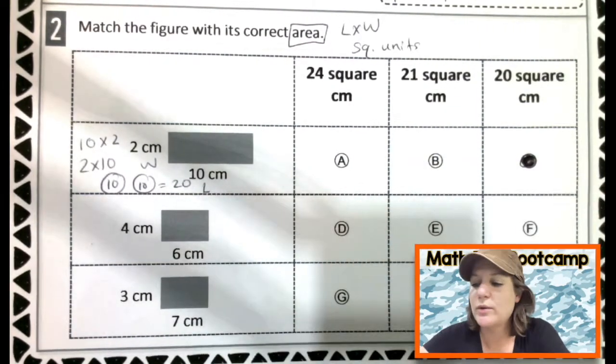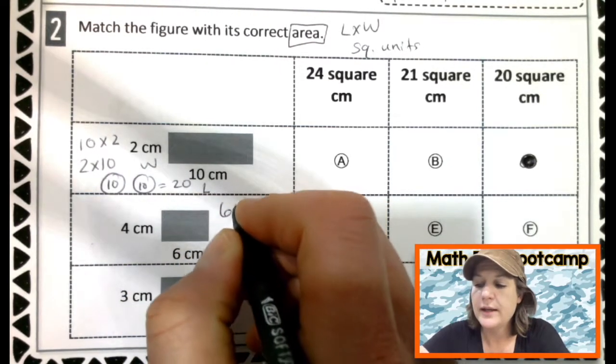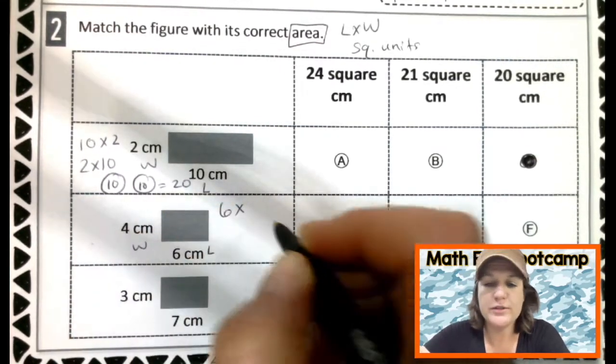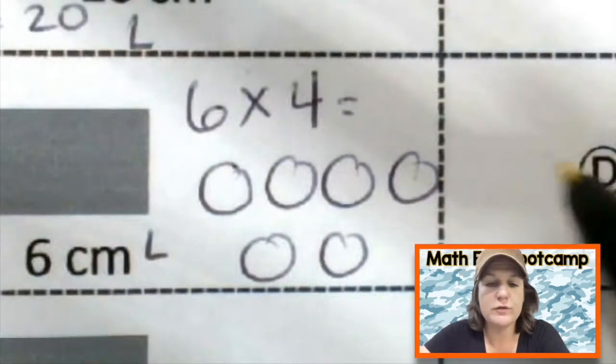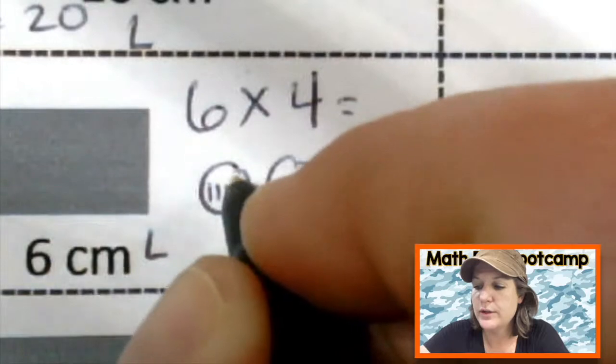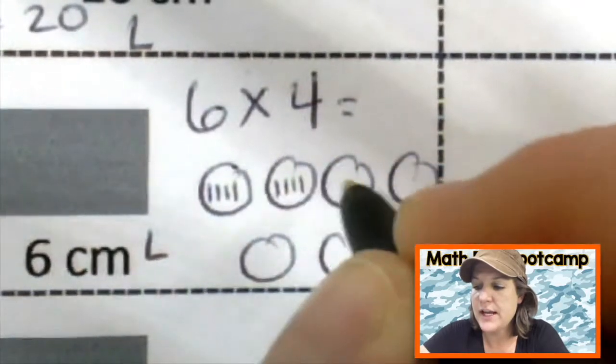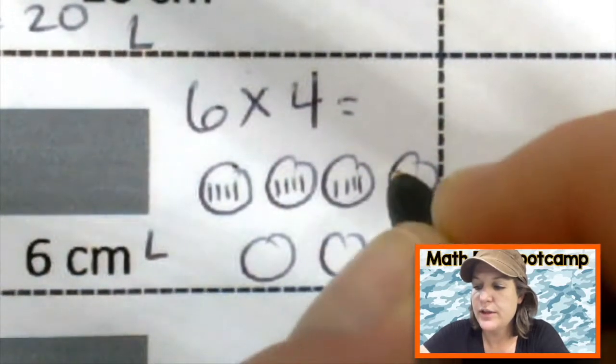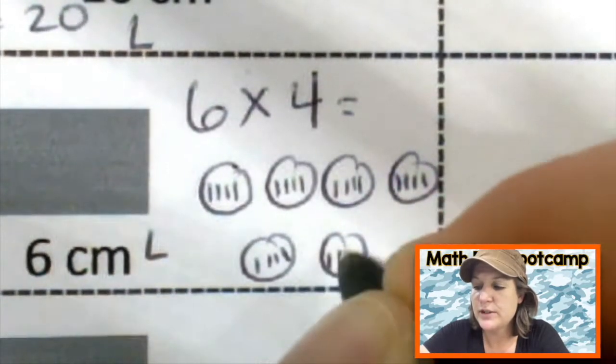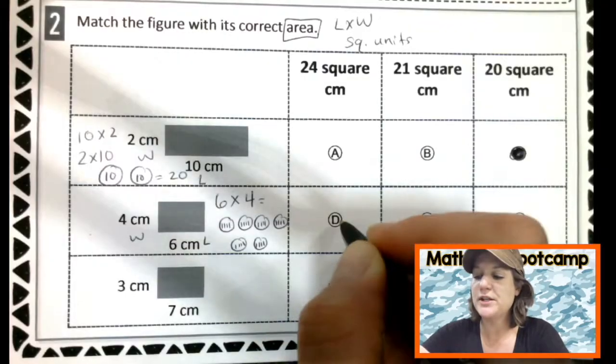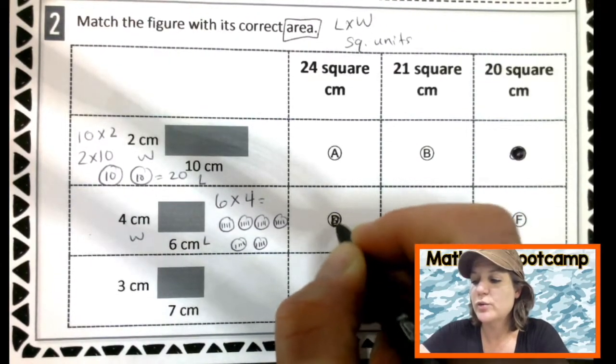The next one we have a length of six and a width of four. So six times four. I'm going to do six groups and do four in each. One, two, three, four, five, six, seven, eight, nine, ten, eleven, twelve, thirteen, fourteen, fifteen, sixteen, seventeen, eighteen, nineteen, twenty. Twenty. Twenty one, twenty two, twenty three, twenty four. So it should be twenty four square centimeters.